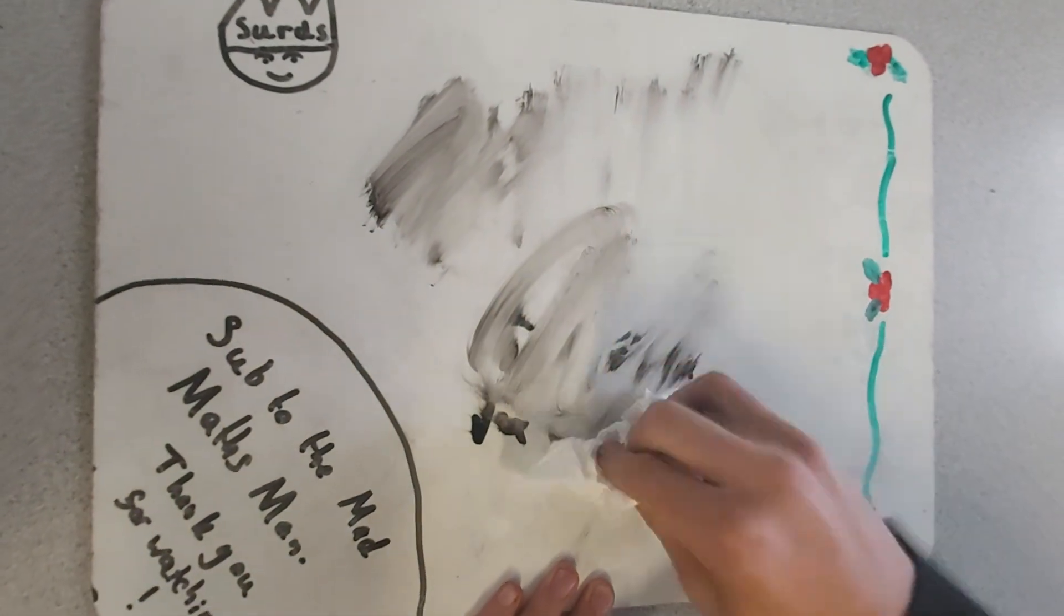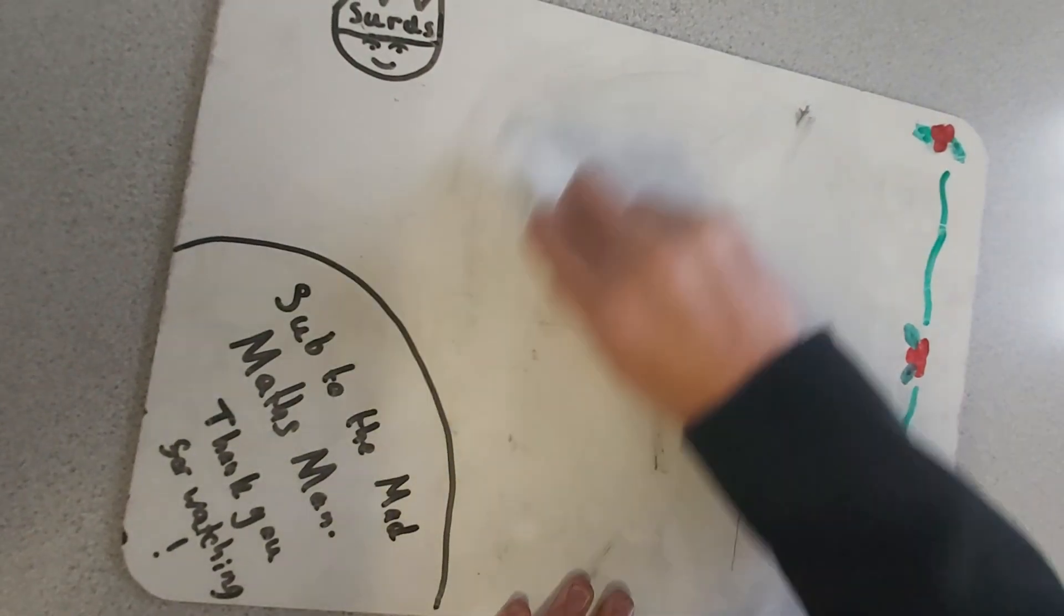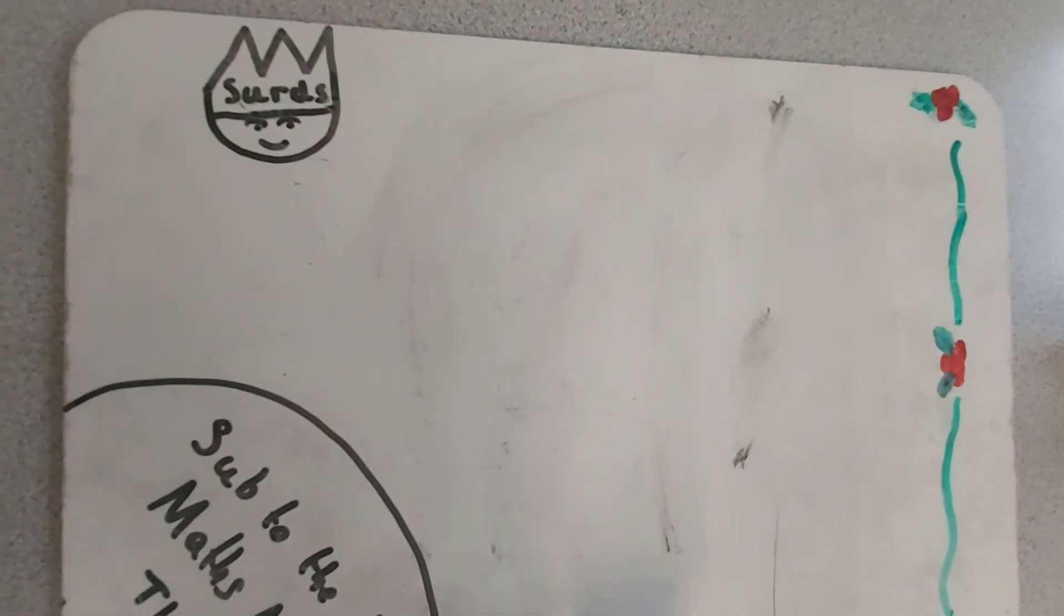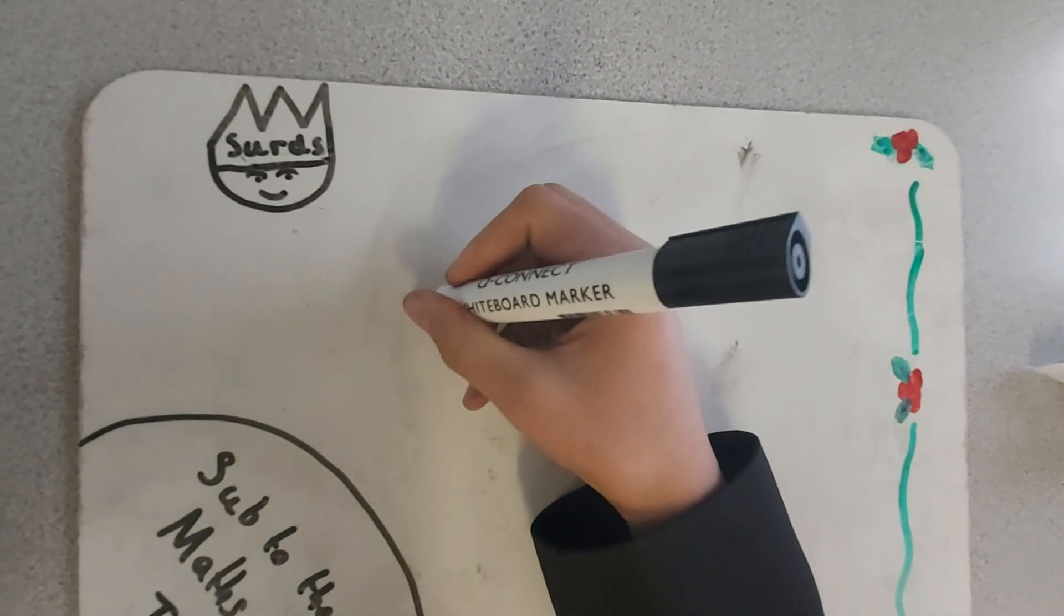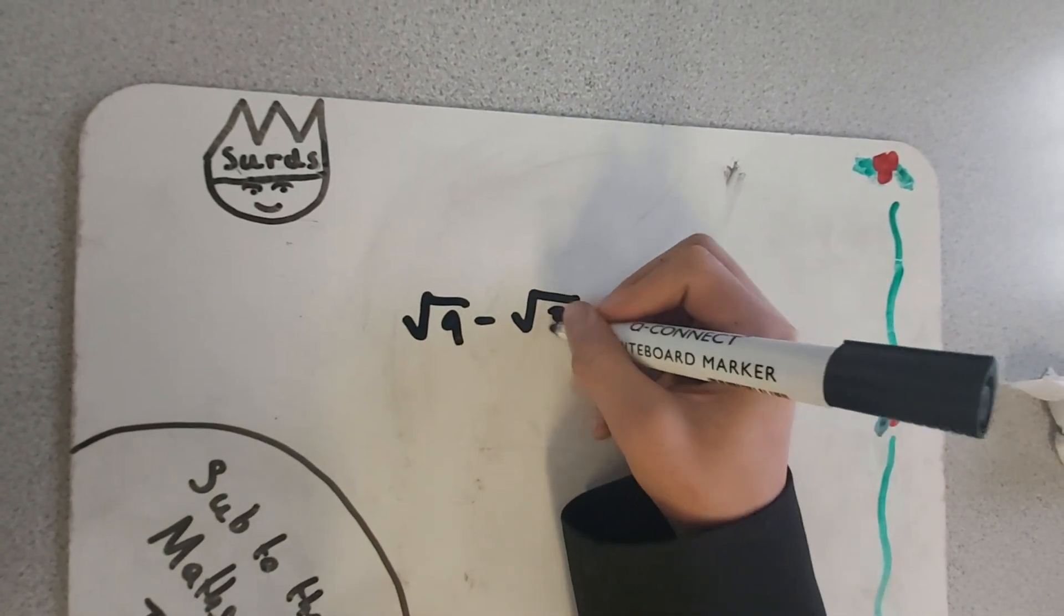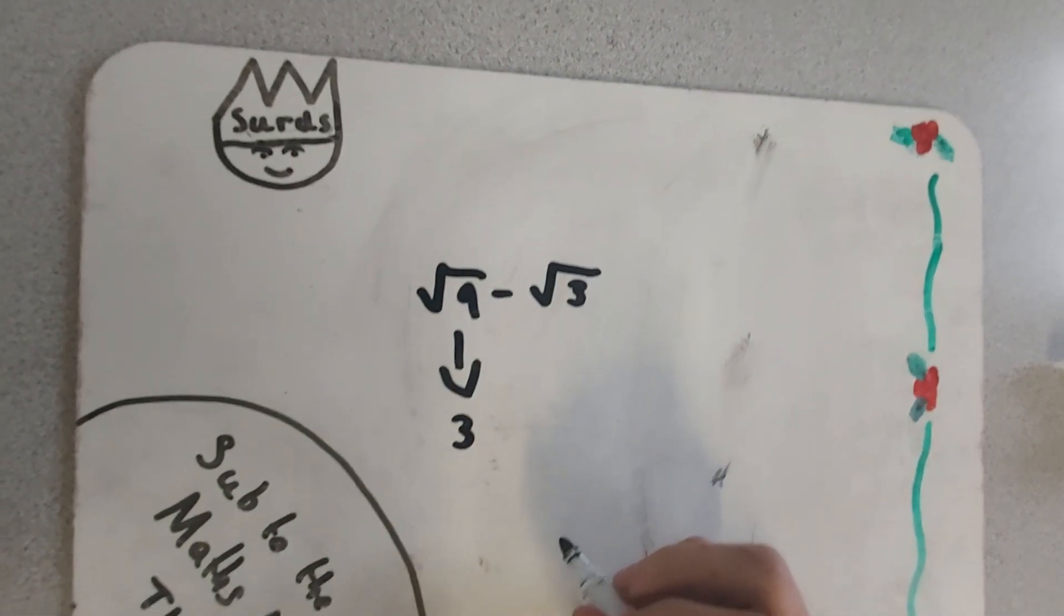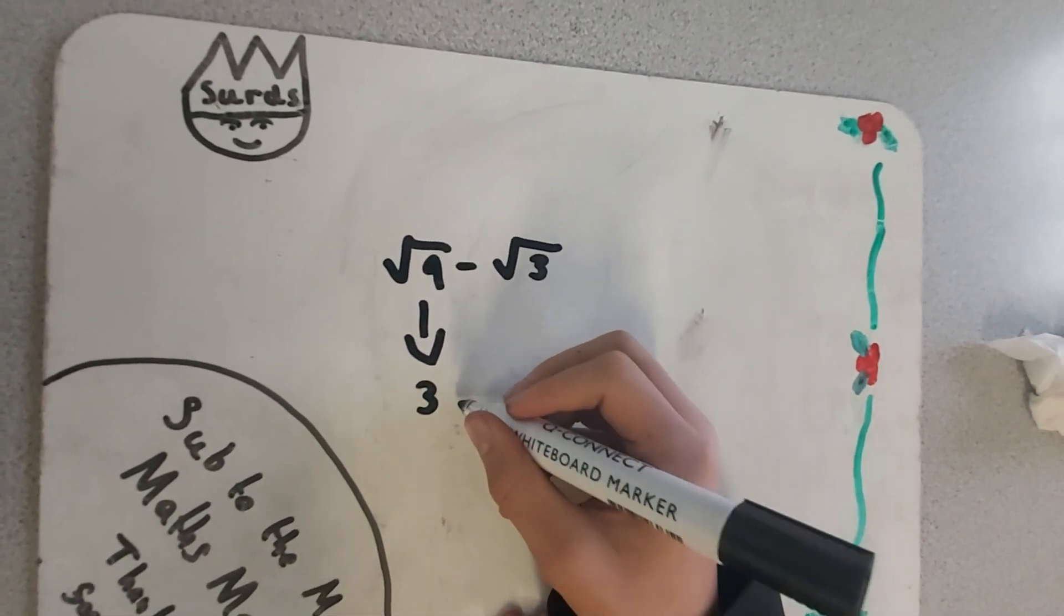Now we will move on to subtraction. When subtracting with surds, we simplify them. An example of this is root 9 minus root 3. You simplify root 9 to make it 3. Therefore, the answer is 3 minus root 3.